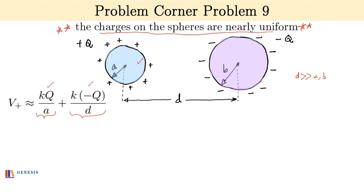Which is the potential due to the negatively charged sphere at the location of the positive sphere. In an exact similar manner, the potential of the negative sphere will be V minus which is nearly K minus Q by B plus KQ by D. The first term is the potential due to its own charge. The second term is the potential due to the positive sphere at the location of the negative sphere.